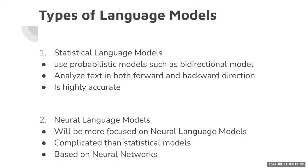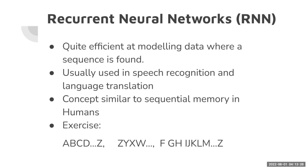We have two types of language models. The first is a statistical language model, which uses a bidirectional model — as the name suggests, it analyzes text in both forward and backward directions and is able to predict the next word with high accuracy. We will be focusing more on neural language models, which are more complicated as they are based on neural networks. To understand them, we start with recurrent neural networks — RNNs.